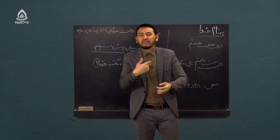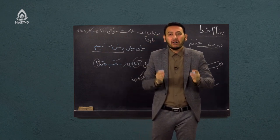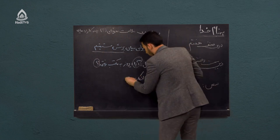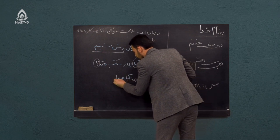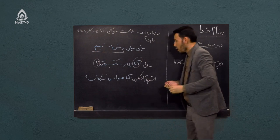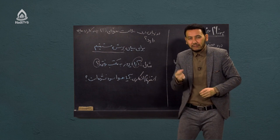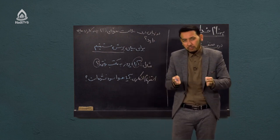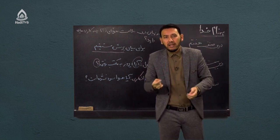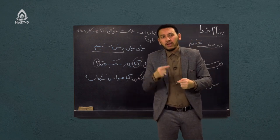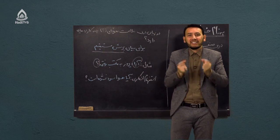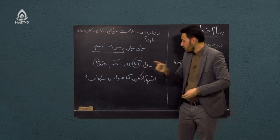در استفهام انکاری، سوالی است که جوابش معلوم است. هدف از این سوال این نیست که جوابی از مخاطب بگیریم؛ بلکه می خواهیم یک مطلبی را که قبلاً بیان شده تأکید کنیم. به طور مثال: از خانه با دوستانتان به سمت مکتب می آیید، هوا بسیار سرد است. یکی از دوستانتان می پرسد: 'آیا هوا سرد نشده است؟'